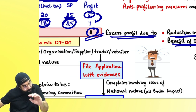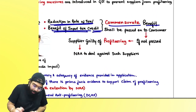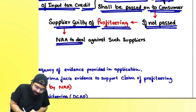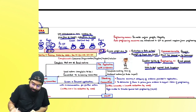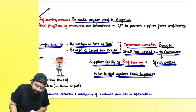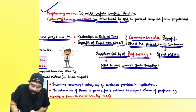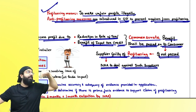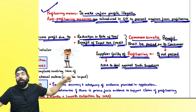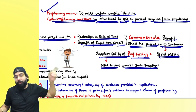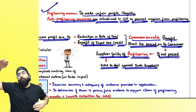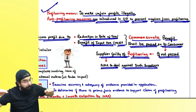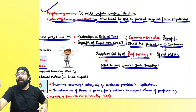Whatever benefit there is from a GST rate coming down — the total benefit has to be passed on to the consumer. If you don't pass it on, you are guilty of profiteering. National anti-profiteering measures are introduced in GST to prevent suppliers from profiteering. GST rate came down, benefits should be passed on to consumer. If cost came down because of ITC, the supplier's selling price also should come down. That is known as profiteering.